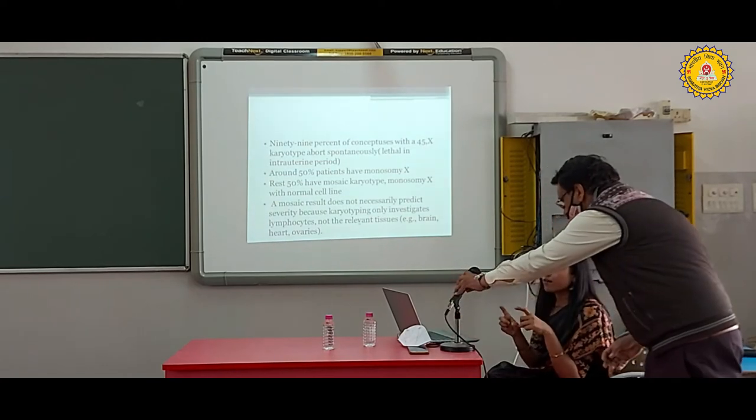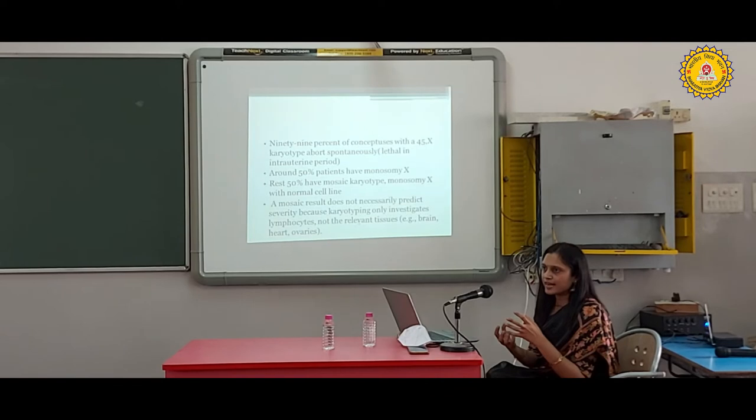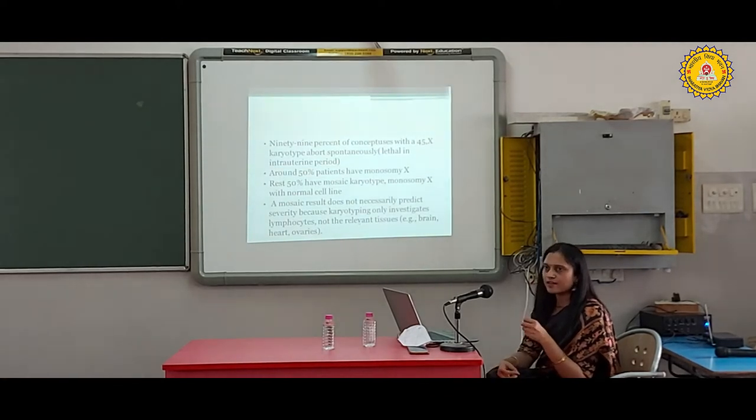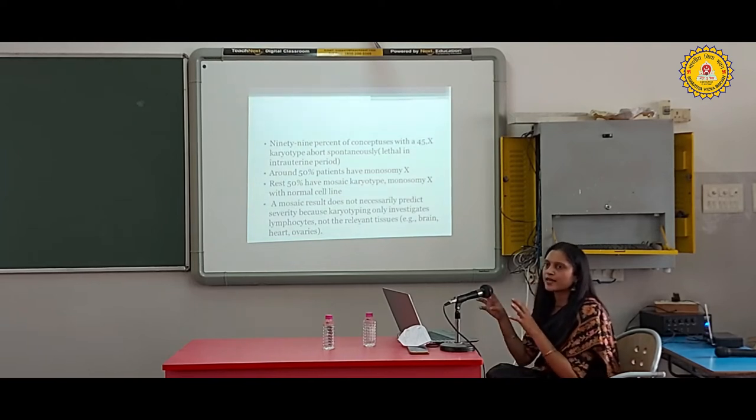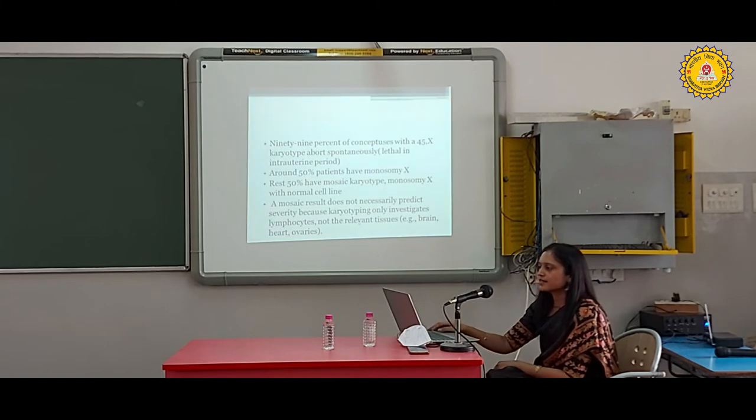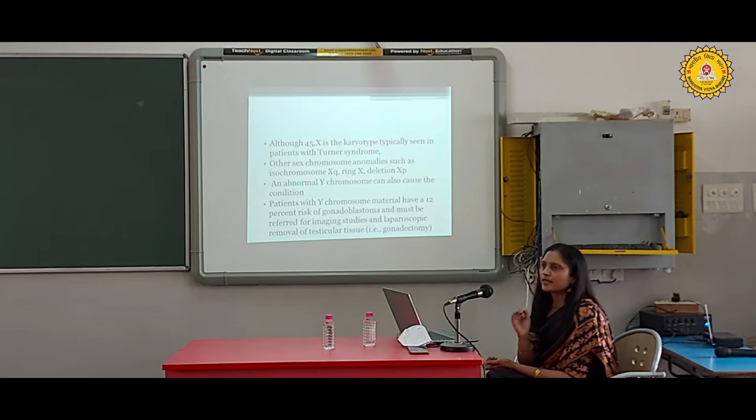On the basis of karyotype, we cannot predict who will be better. One female with 45X and another with mosaic 45X plus another cell line - both generally have mosaic Turner phenotype. In mosaicism, we cannot predict which tissue has which cell type. For karyotype, we sample blood lymphocytes, so we cannot predict what cell types are in ovaries, heart, or brain. Karyotype doesn't necessarily predict phenotype.